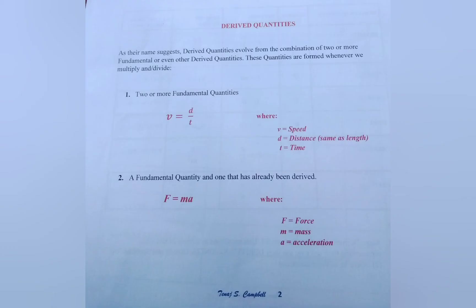Moving on to derived quantities we see that as their name suggests derived quantities evolve from the combination of two or more fundamental or even other derived quantities. These quantities are formed whenever we multiply and or divide two or more fundamental quantities, a fundamental quantity and one that has already been derived, or by the multiplication and division of two other derived quantities.